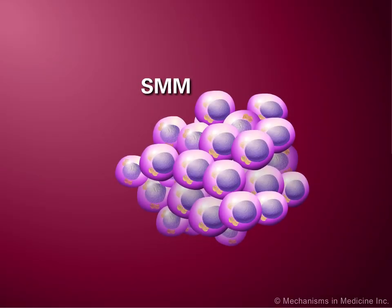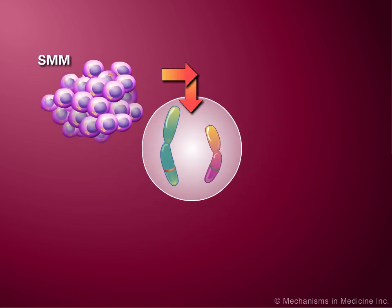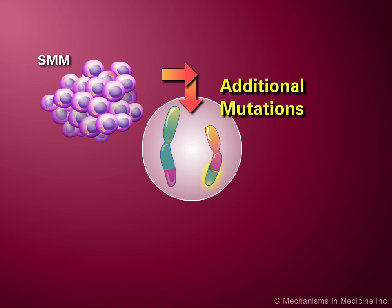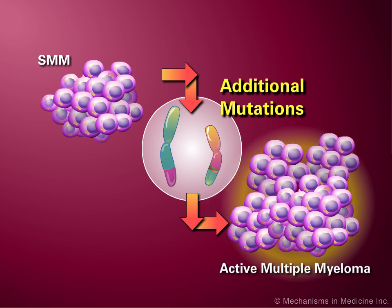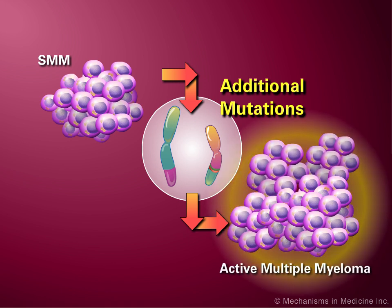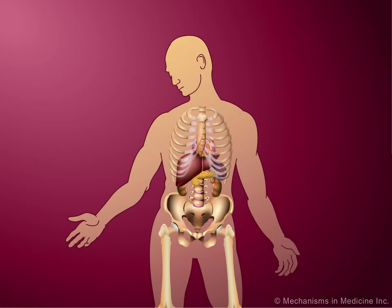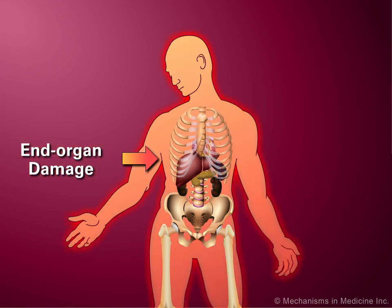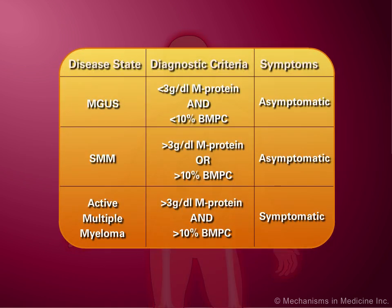Although patients with MGUS or smoldering myeloma are asymptomatic, it is thought that additional mutations drive the clonal plasma cell populations to evolve towards a more aggressive state that leads to end-organ damage and then becomes symptomatic active multiple myeloma. Active disease is diagnosed if end-organ damage is detected with the development of symptoms and high levels of both the M-protein and plasma cells within the bone marrow.